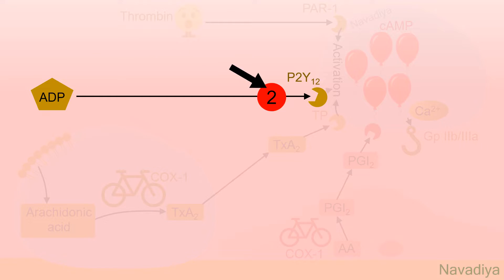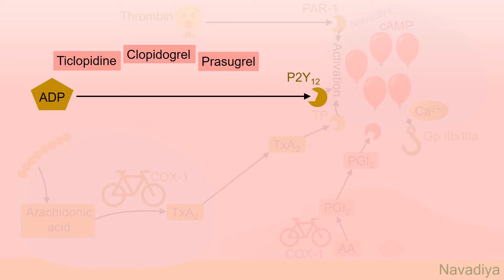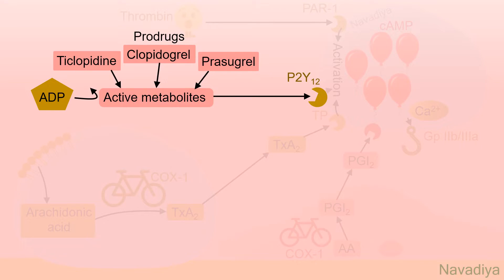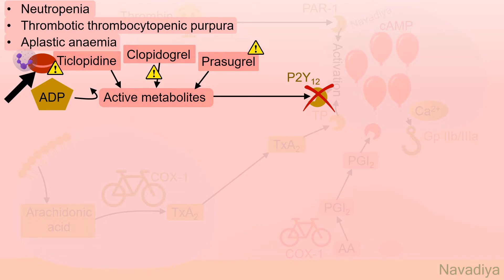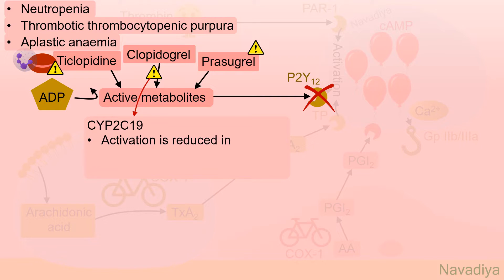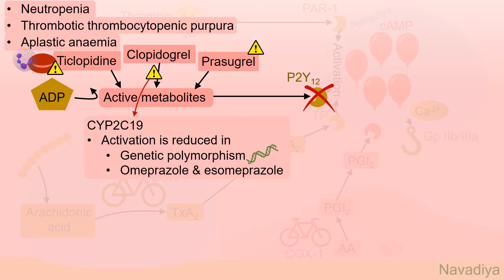Next we have P2Y12 inhibitors. Drugs in this group are ticlopidine, clopidogrel, and prasugrel. They are pro-drugs activated inside the body. Their active metabolites irreversibly inhibit the P2Y12 receptor so platelets are not activated. Ticlopidine is associated with severe hematologic adverse events like neutropenia, thrombotic thrombocytopenic purpura, and aplastic anemia. Regarding clopidogrel, its activation occurs mainly by CYP2C19. Due to genetic polymorphism, some patients may be poor metabolizers, so clopidogrel is not activated and its therapeutic effects are not achieved. Activation is also reduced by inhibitors of CYP2C19 like omeprazole and esomeprazole, so be careful about these interactions.